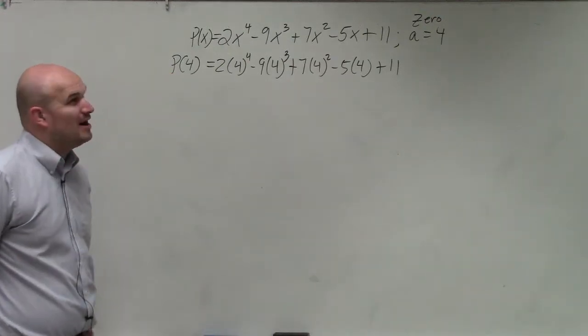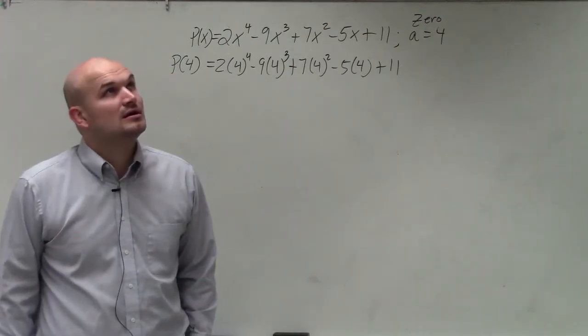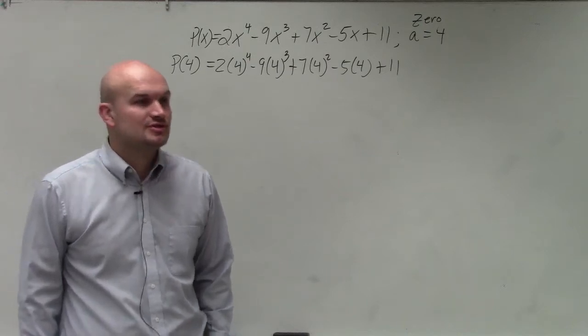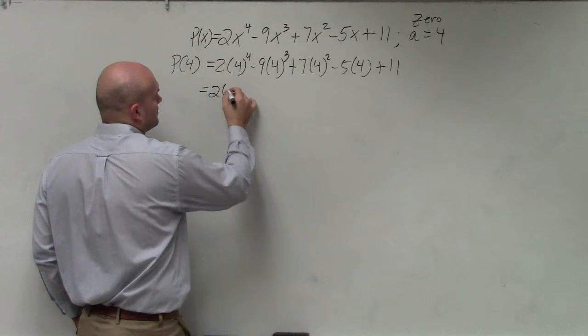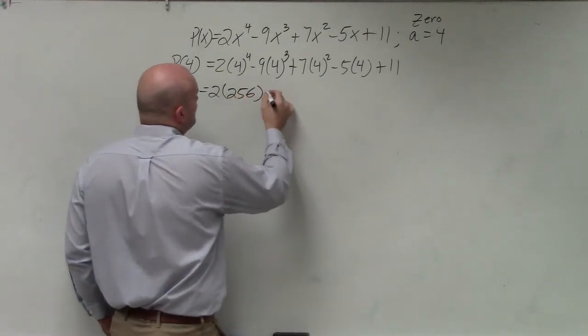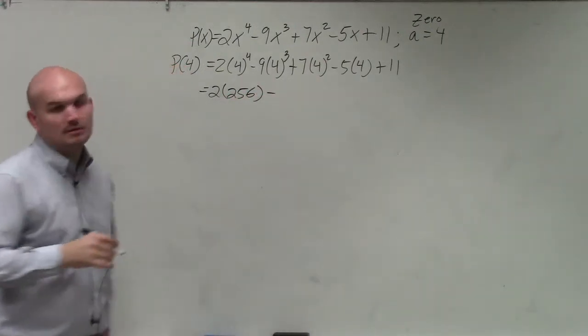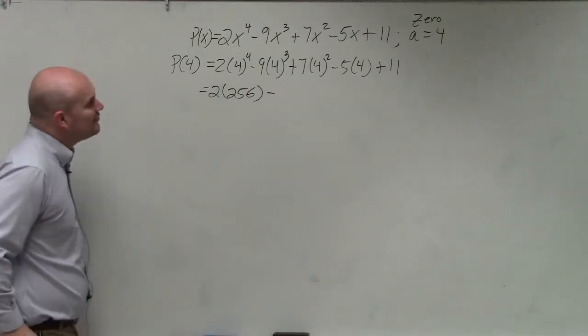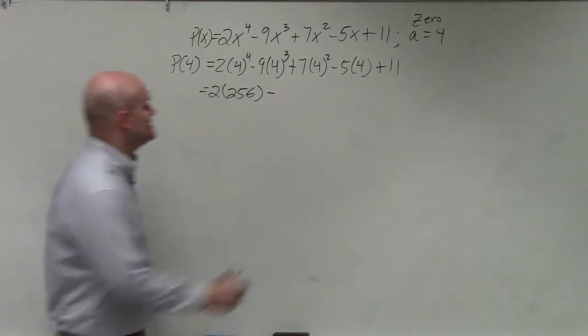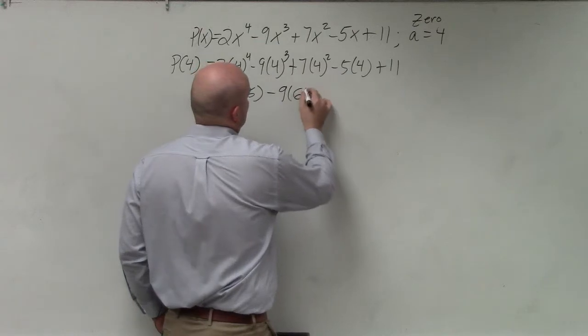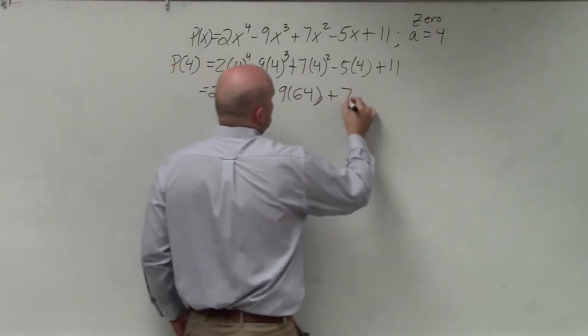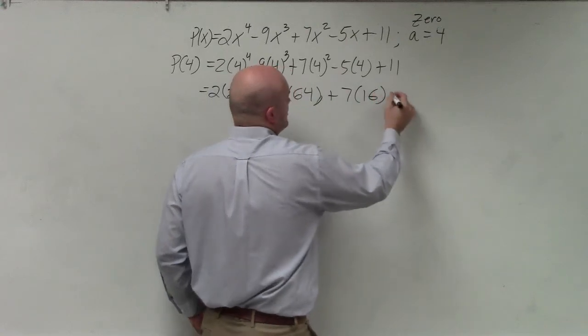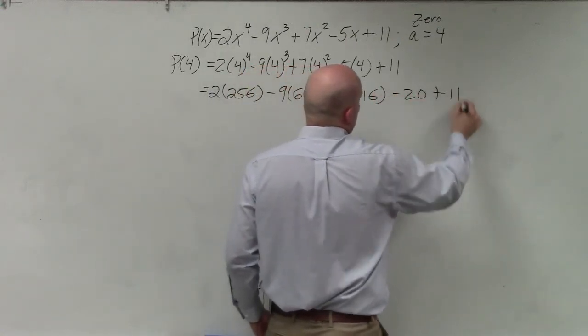4 to the fourth power, 64 times 4, 256. It is on the board as well. 4 cubed is going to be 64 plus 7 times 16 minus 20 plus 11.